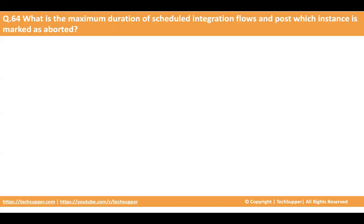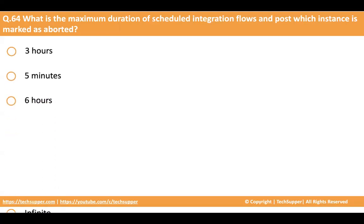The next question is: what is the maximum duration of scheduled integration flows, after which the instance is marked as aborted? This question is about scheduled integration — the previous one was about asynchronous. The options are 3 hours, 5 minutes, 6 hours, and infinite. The correct answer is 6 hours again. If your scheduled integration does not complete within the 6-hour window, it will be aborted.